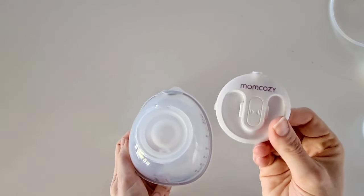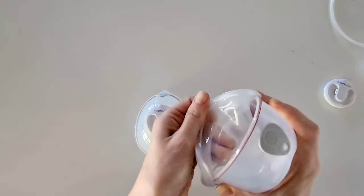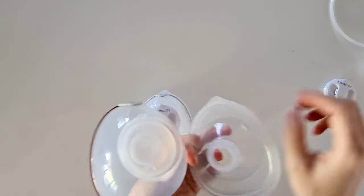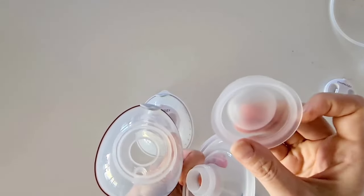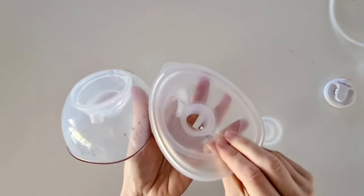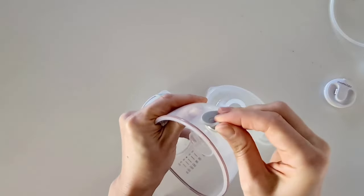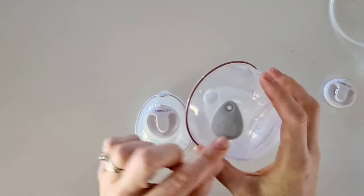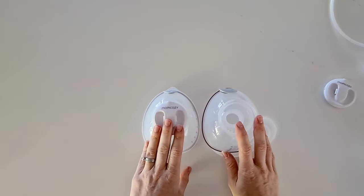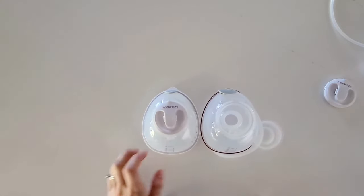We then pull apart our pump. You have your duckbill valve on this side, there is a diaphragm, you have your flange and any flange inserts. Make sure that you separate these. I also like to open up the valve so we can clean under there. Let's take a look at the next step in cleaning your Momcozy pump.